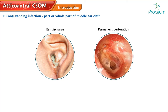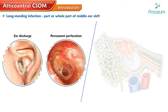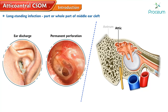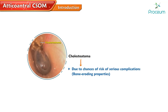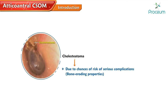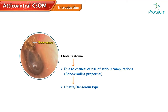It involves the postero-superior part of the middle ear cleft — that is, the attic, antrum, posterior tympanum, and mastoid. It is associated with cholesteatoma, due to which there are chances of serious complications because of its bone-eroding properties. For this reason, the disease is also called the unsafe or dangerous type.